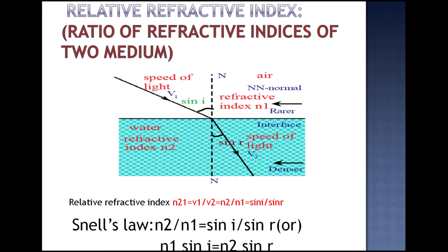This is called the relative refractive index. We define relative refractive index N21 as equal to the refractive index of the second medium divided by the refractive index of the first medium. This applies when a light ray passes from the first medium to the second medium.